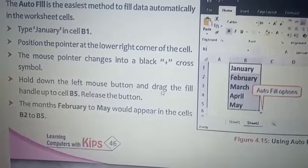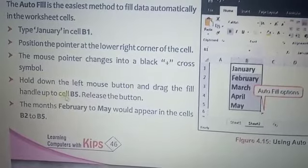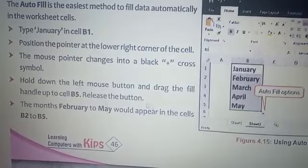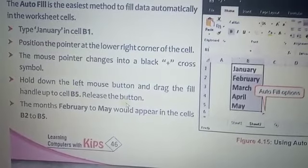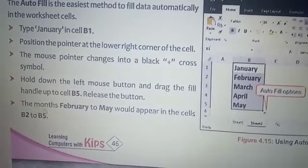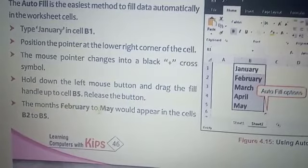Hold down the left mouse button and drag the fill handle up to cell B5, then release the button. It automatically fills the months February to May.